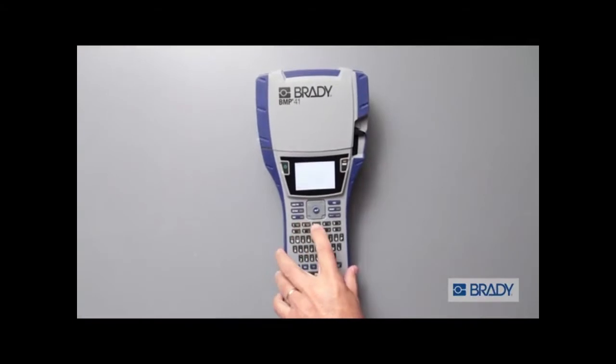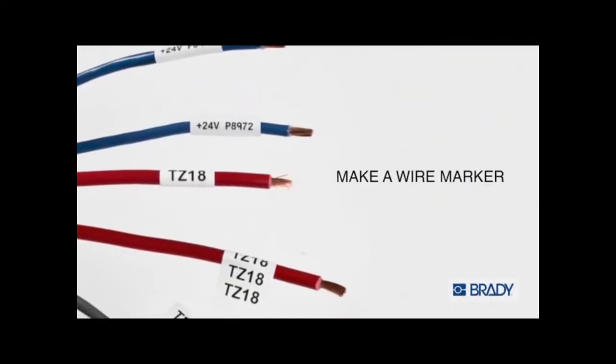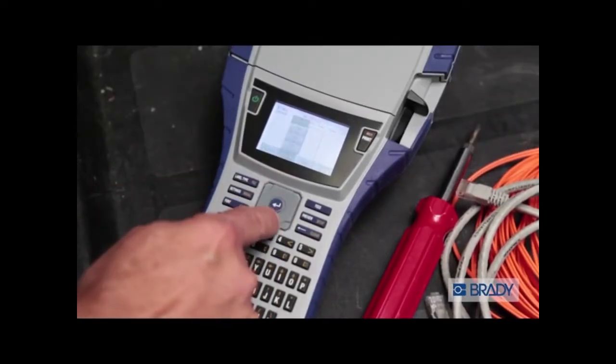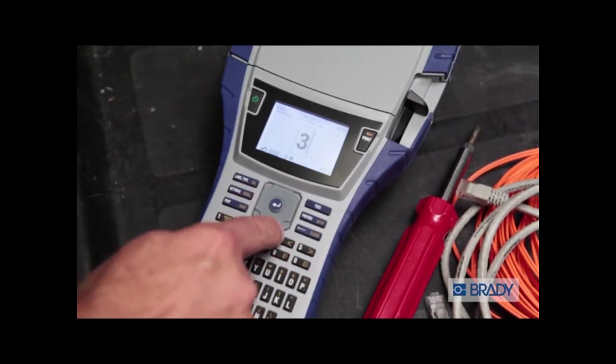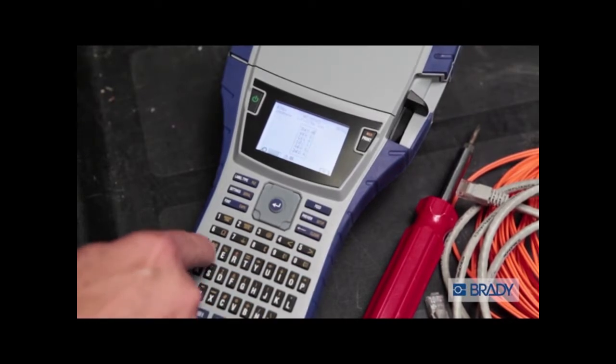The QWERTY keyboard and large backlit display make label printing a snap. Look how quickly you can create a wire marker. First, select wire marker label type and wire size. Next, type in your data. Notice how the text is automatically repeated. Press print and you're done.